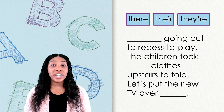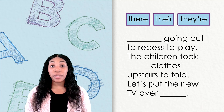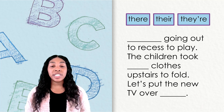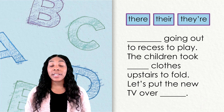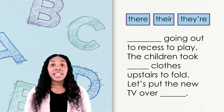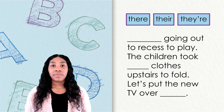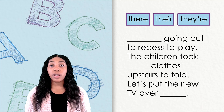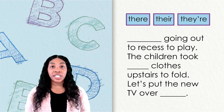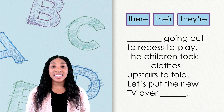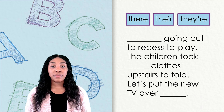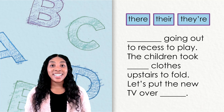Now we are going to try to figure out which 'there' belongs in the blanks. Here we go. Blank going out to recess to play. The children took blank clothes upstairs to fold. Let's put the new TV over blank. The first blank seems to mean 'they are' in order for it to make sense. The contraction t-h-e-y apostrophe r-e fits best here.